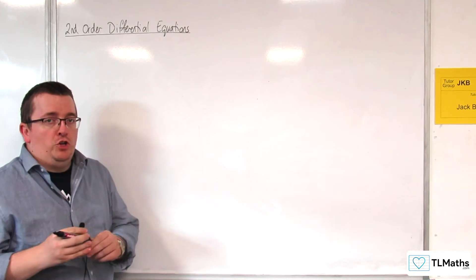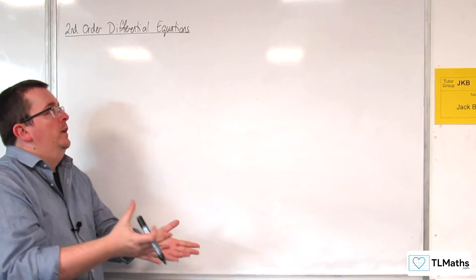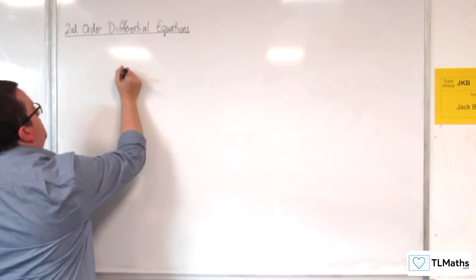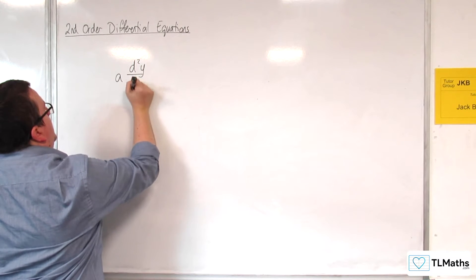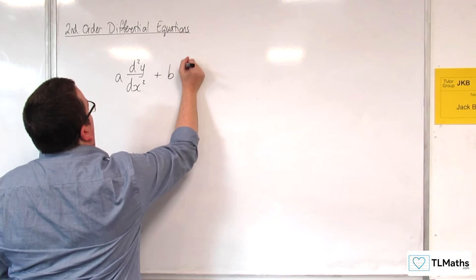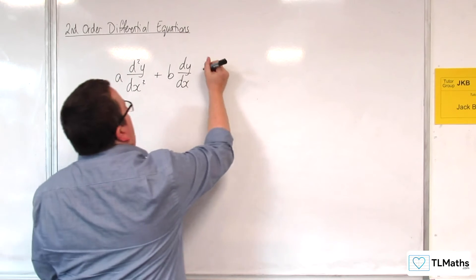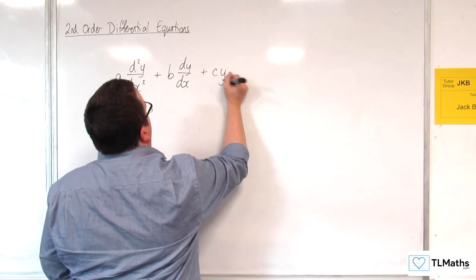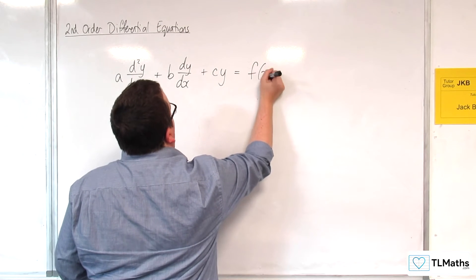A second-order differential equation just means that the highest-order differential that you have is 2. So that means we can have some constant multiple of d²y/dx², we can have some constant multiple of dy/dx involved, and some multiple of y. And that's going to be equal to some function of x.